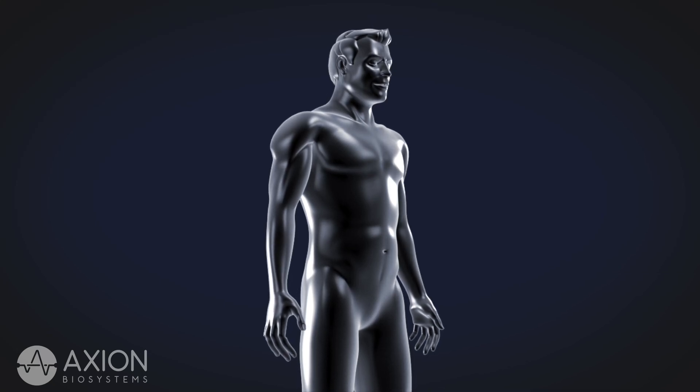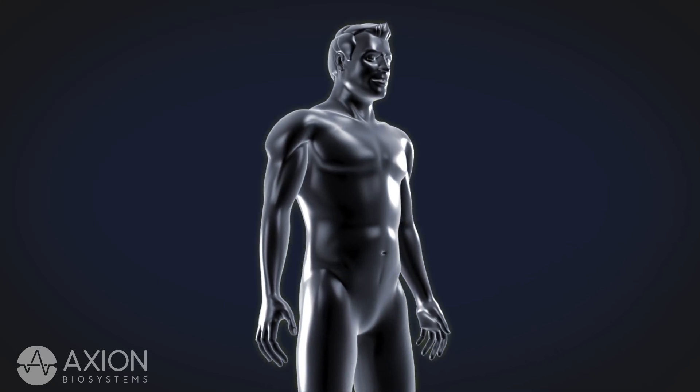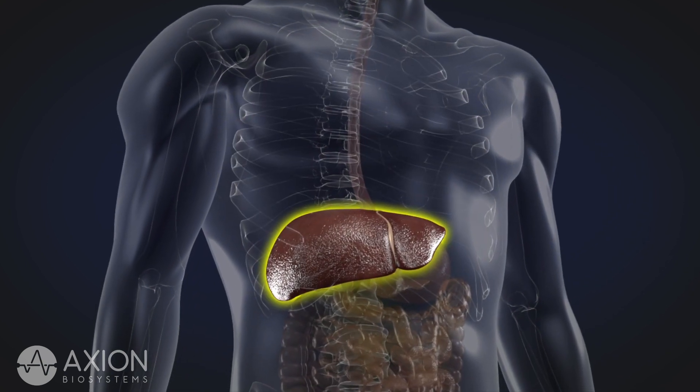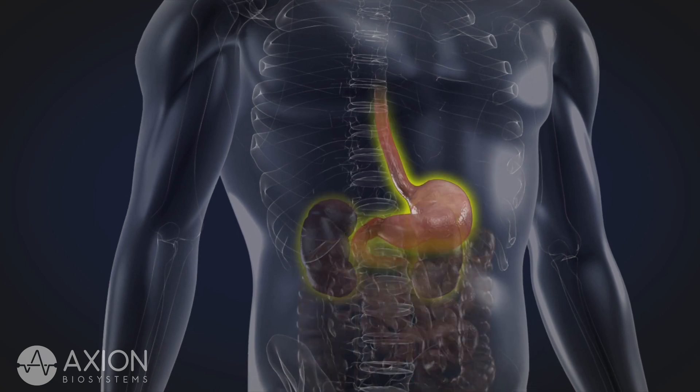Epithelial tissue is a major building block of many organs, like the skin, lungs, liver, kidney, and digestive tract.